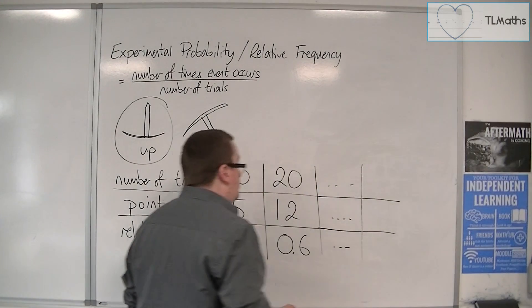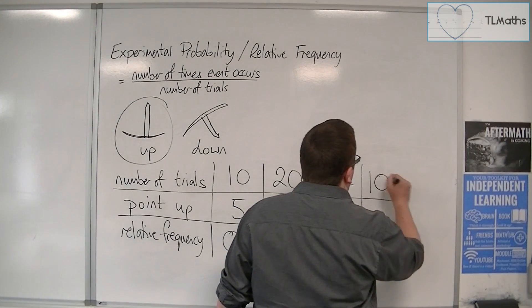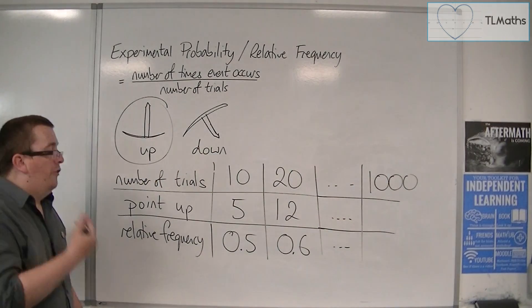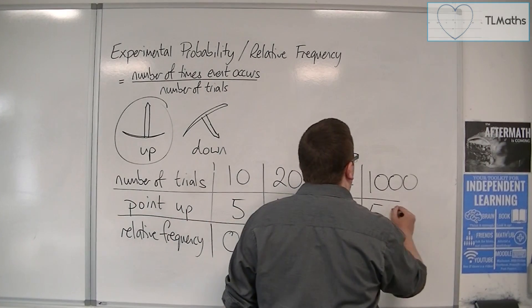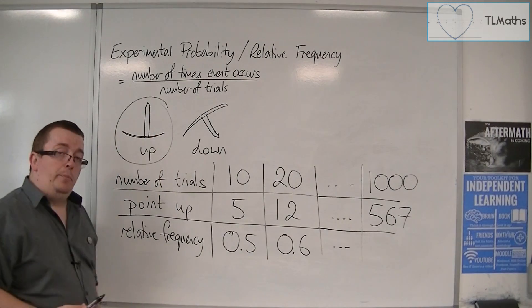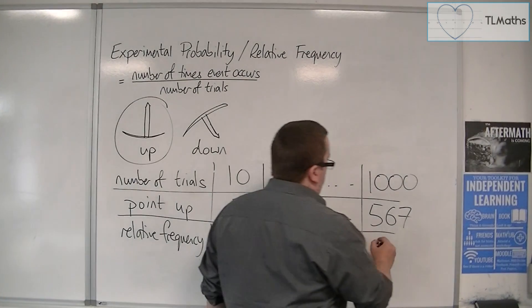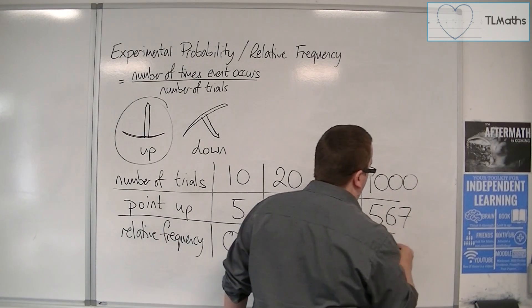And then, maybe I would end up with having done 1,000 trials. And of those 1,000 trials, I have recorded that 567 of them were point up. And so, the probability is 567 divided by 1,000, or 0.567.